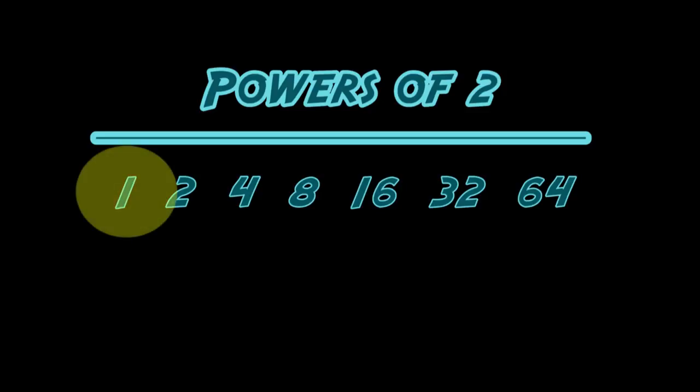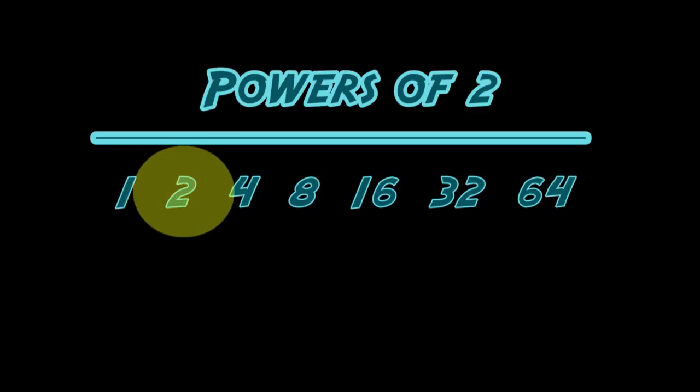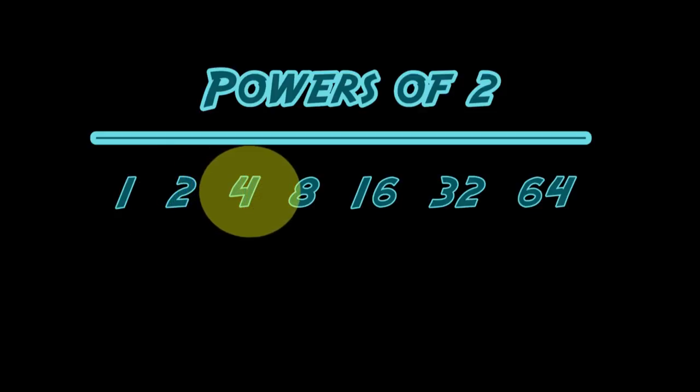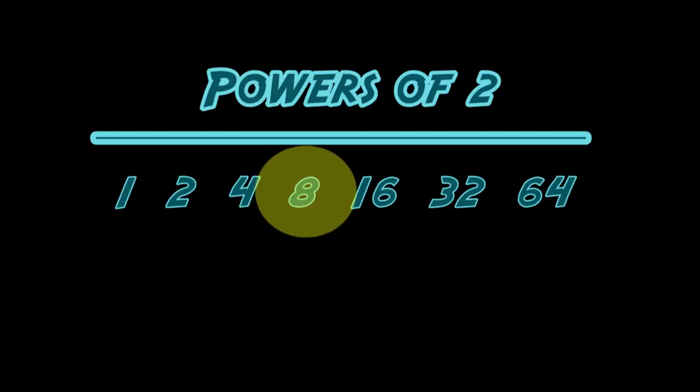First, let's be sure that we understand that any number can be represented by the power of 2. So, starting with the first number 1, we have 1, 2, 1 plus 2 makes 3, we have 4, 1 plus 4 makes 5, 2 plus 4 makes 6, 1 plus 2 plus 4 makes 7, 8, and so on.